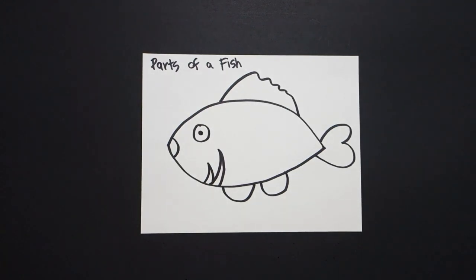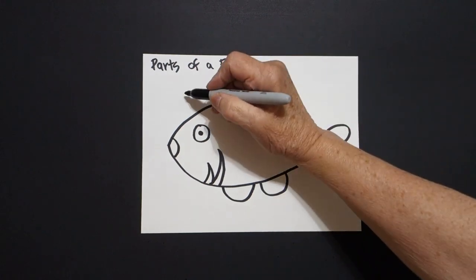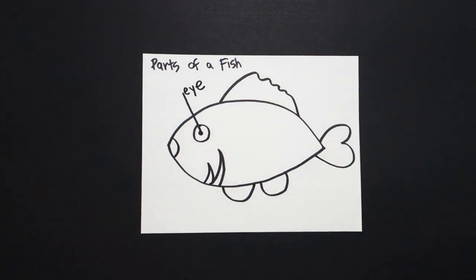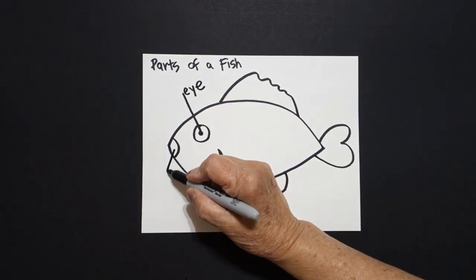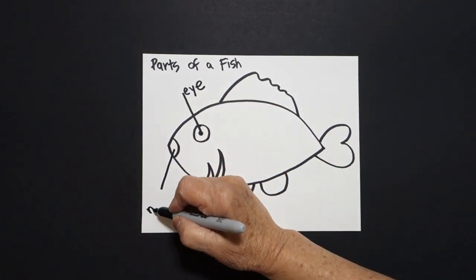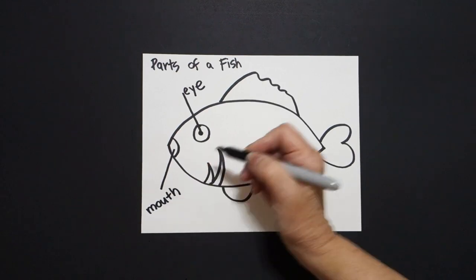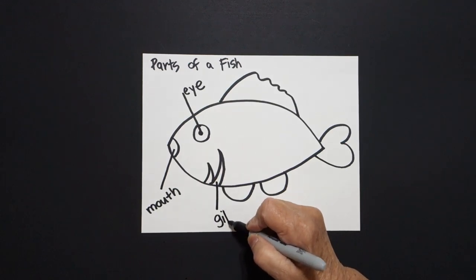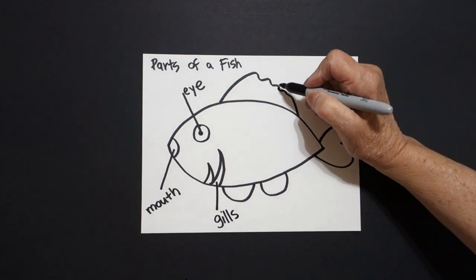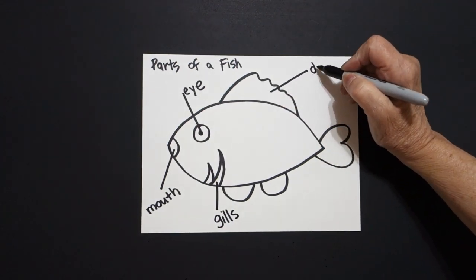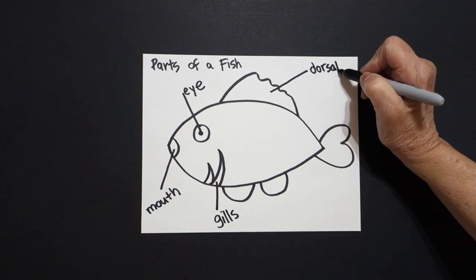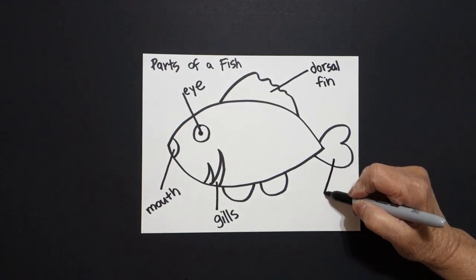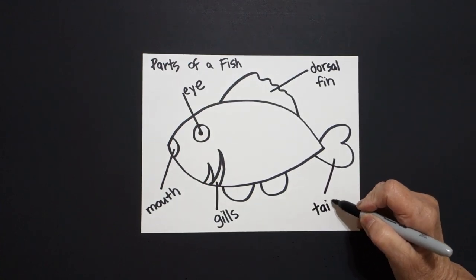All right, now we're going to label the body parts of our fish. I draw a straight line in and this is my eye. I draw a straight line down and this space right here is the mouth. I draw a straight line down and these are the gills. I come up on top and I draw a straight line out and this is the dorsal fin. Then I come all the way down, I draw a straight line down and this is the tail.